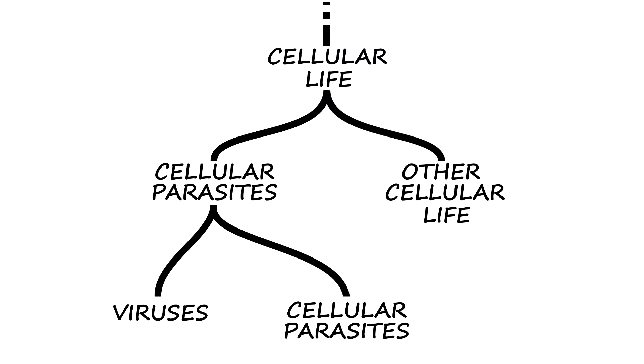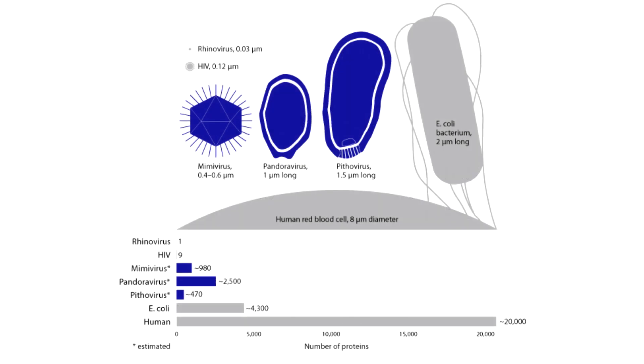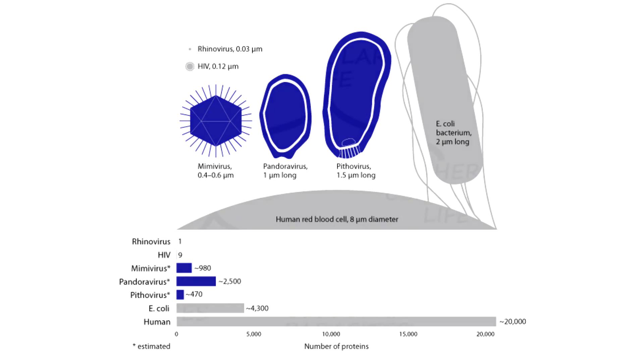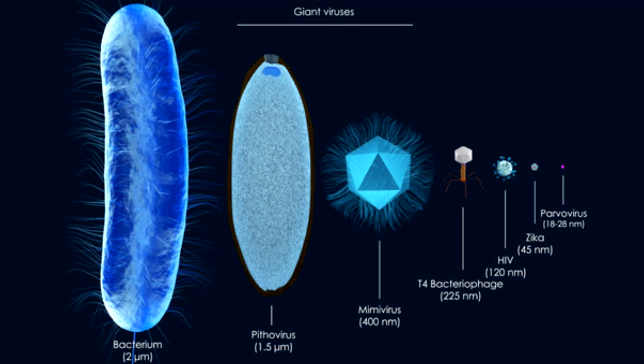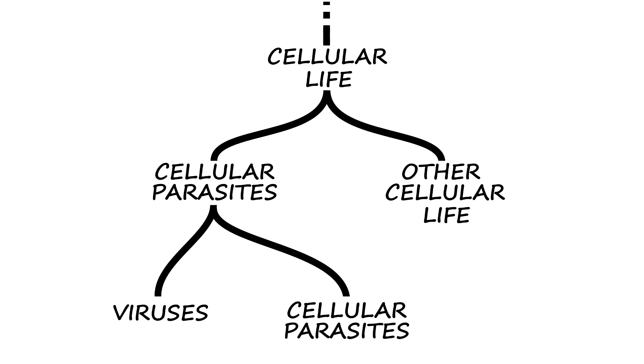This theory is supported by large parasitic viruses that have similar DNA to small parasitic cells. But even though their genetic material might be similar, these giant viruses do not resemble living cellular parasites in any way. They don't even resemble the smallest of them which they supposedly evolved from.